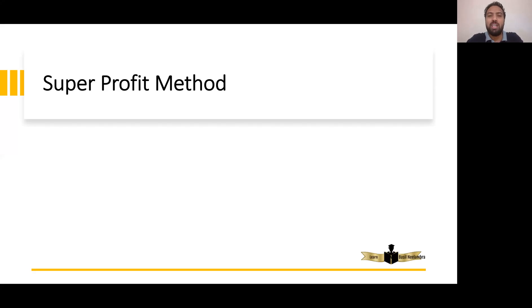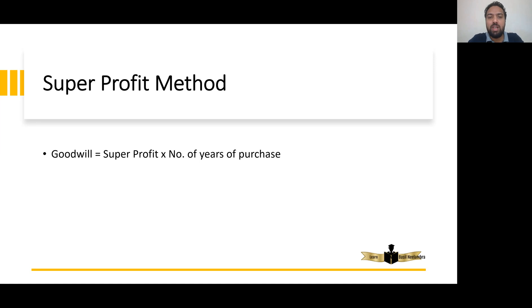Hi everyone, welcome to Learn with Basil Nilangra, and welcome to the second part of Valuation of Goodwill. Now we are going to learn how to calculate the super profit method. In the super profit method, goodwill is calculated as: Goodwill = Super Profit multiplied by Number of Years of Purchase.